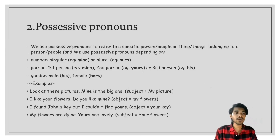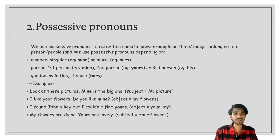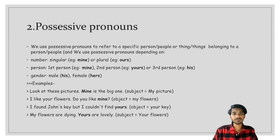The next type is possessive pronoun. We use possessive pronouns to refer to a specific person, people, or a thing belonging to a person or people. In terms of number, singular is 'mine' and plural is 'ours'. In terms of person, first person is 'mine', second person is 'yours', and third person is 'his'. In terms of gender, male is 'his' and female is 'hers'.